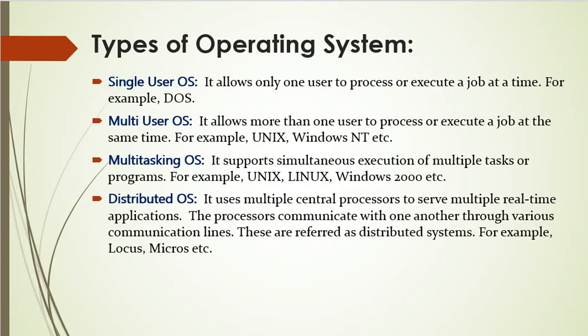Now we will learn the types of operating system, as there are different types available in the market. The first one is a single-user OS — it allows only one user to process or execute a job at a time. An example is the disk operating system (DOS). The next is multi-user operating system, which supports more than one user performing more than one job at the same time. Examples of multi-user OS are Unix, Windows NT, and Windows 2000.